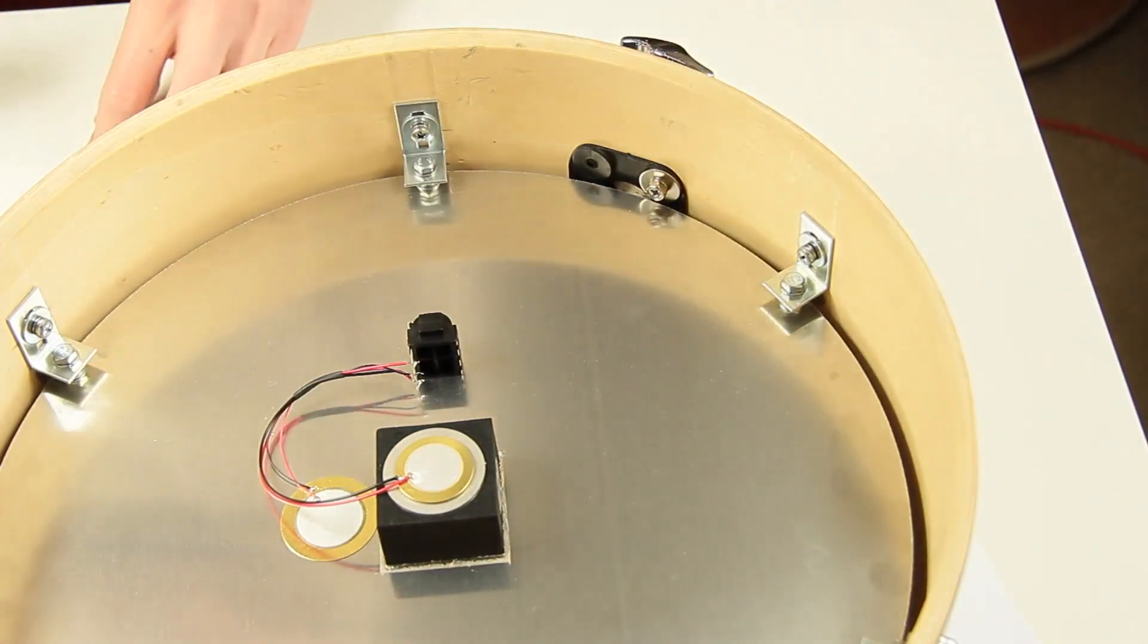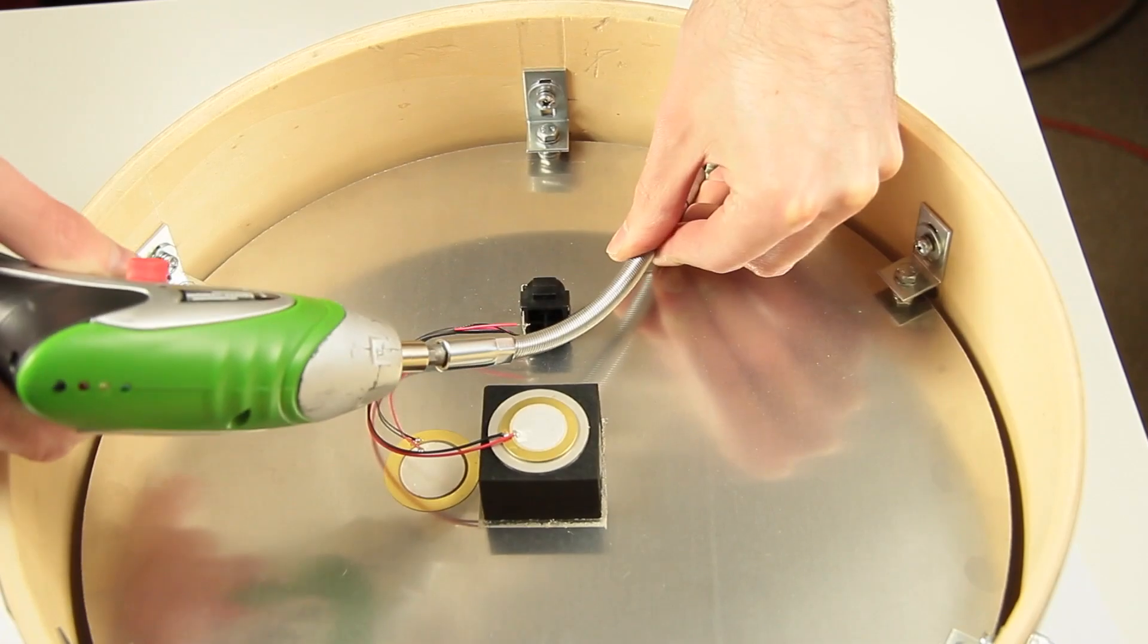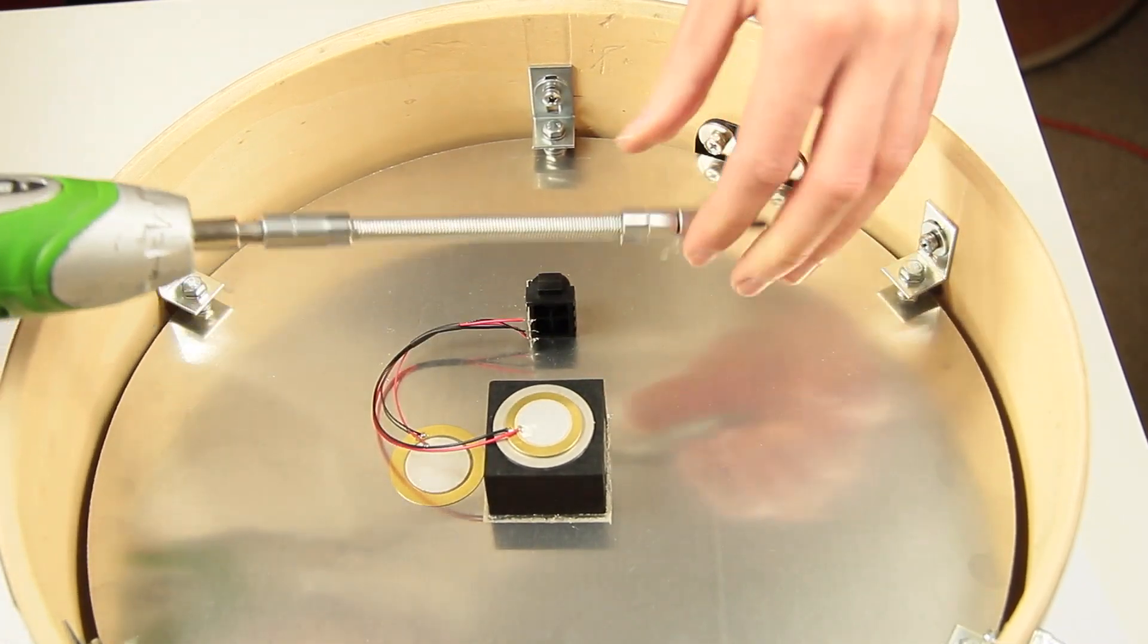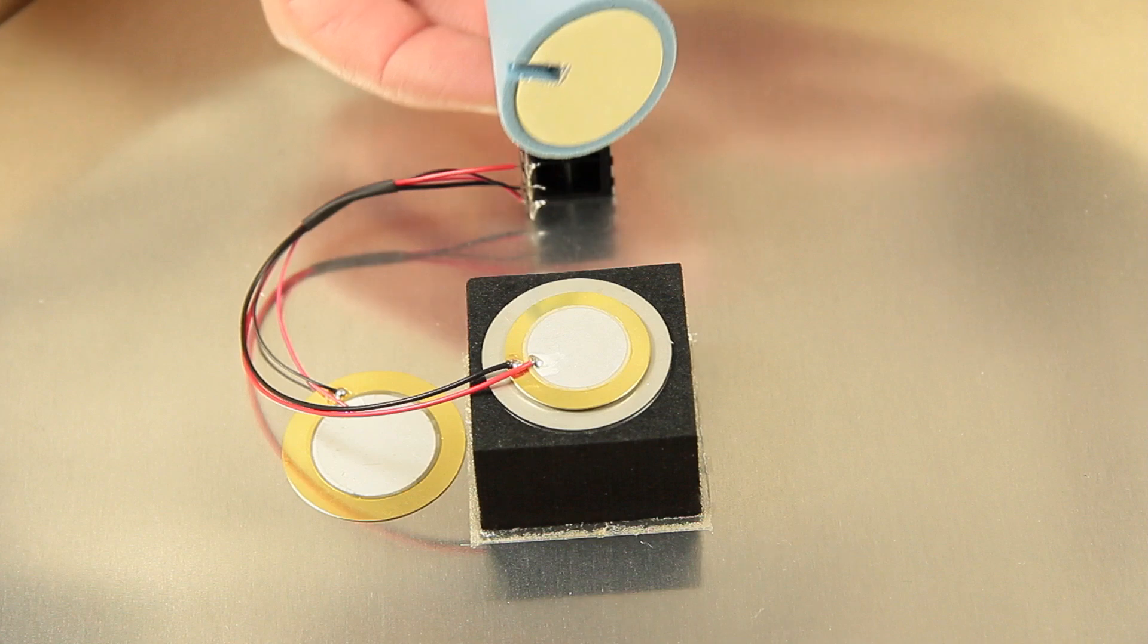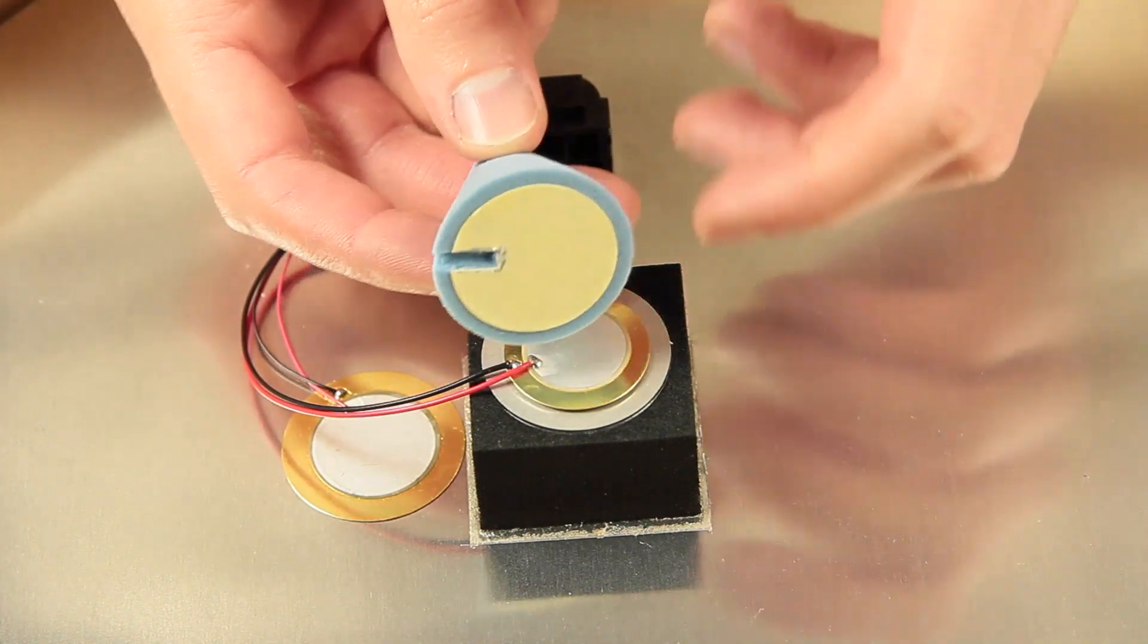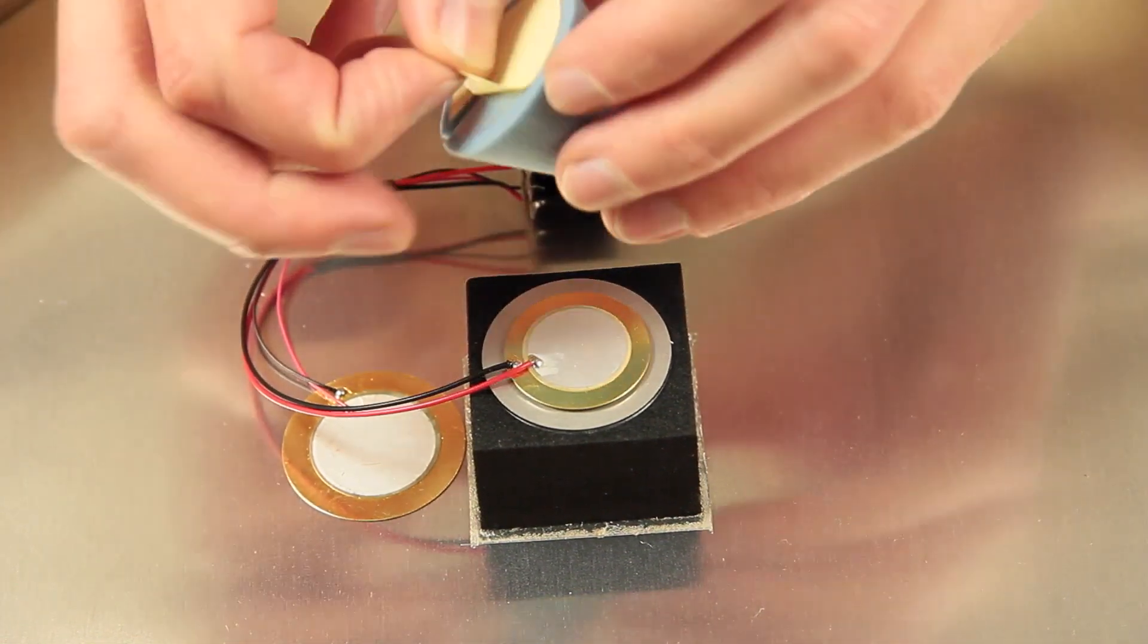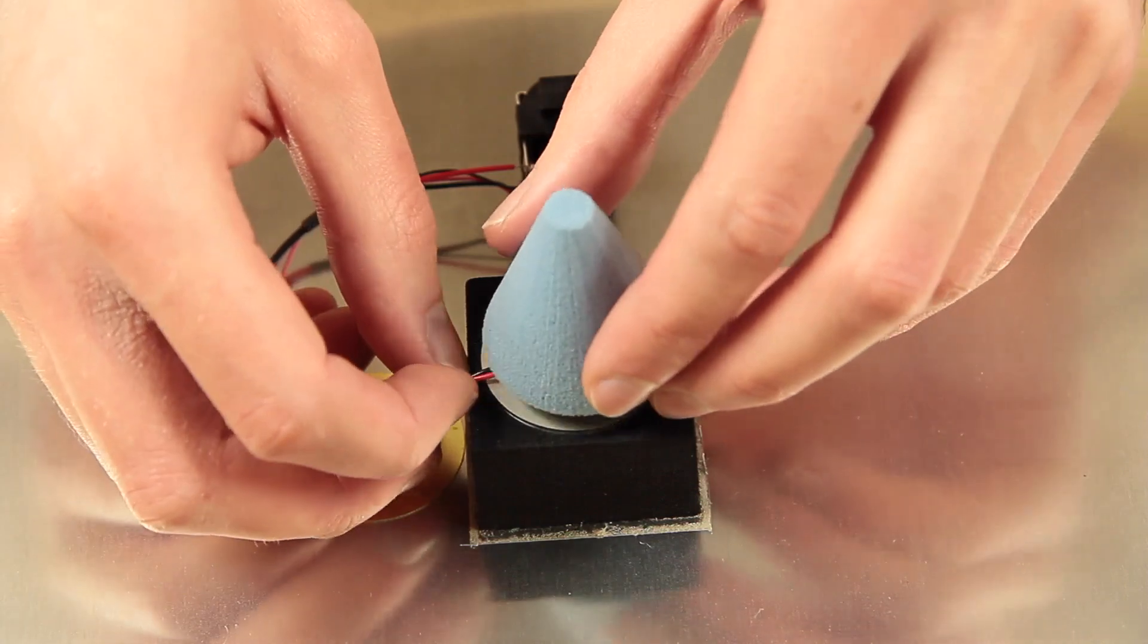The holder screws need to be applied now. Now we need the trigger cone. We cut a little gap into it to give the cable of the piezo some space.